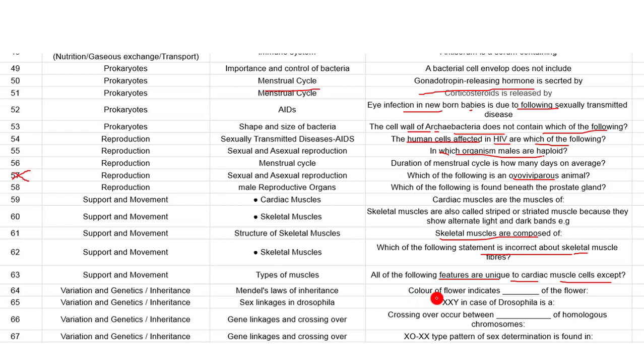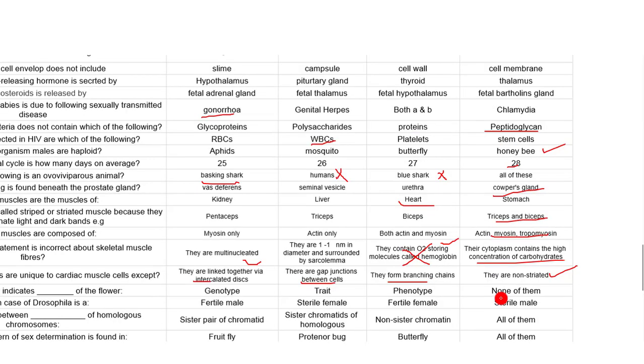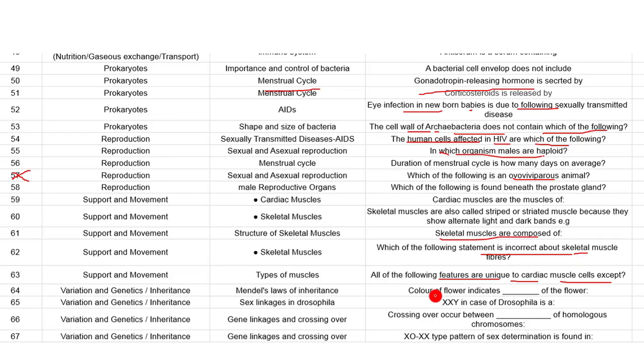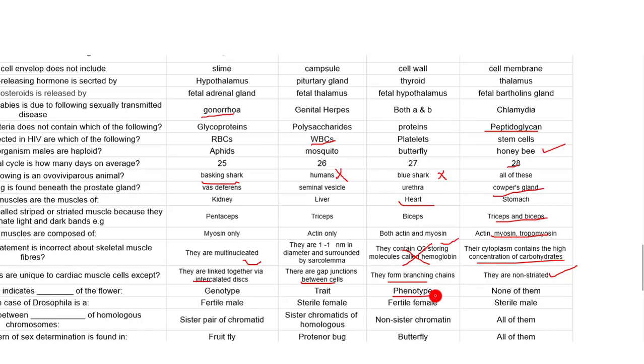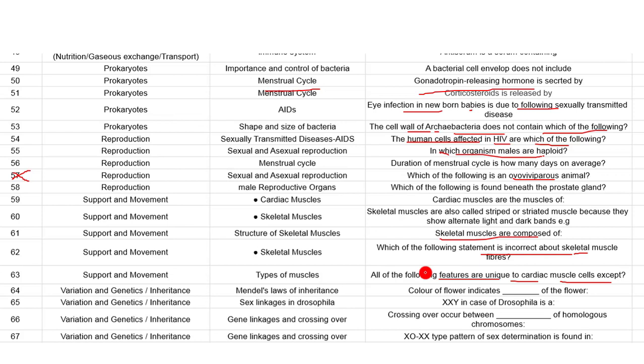All of the following features are unique to cardiac muscle cells except: They are linked together through intercalated discs - right. Gap junctions - correct. They form branching chains - correct. They are non-striated - wrong, they are striated. Skeletal muscle is striated and voluntary; smooth muscle is involuntary. Color of the flower indicates the phenotype. If you look at the color of the flower externally, this represents the phenotype.